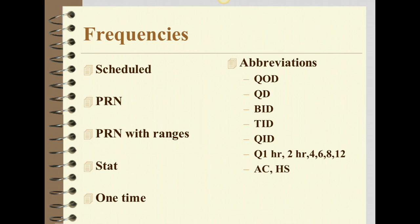When giving medication, it's important to know how frequently. Medications can be scheduled, as needed, as needed within ranges such as with insulin — if the blood glucose is 200 then you administer it — STAT meaning immediately, or one time. Common abbreviations related to frequencies are every other day, every day, BID, TID, QID, every one, two, four, six, eight, and twelve hours, before meals, and at hour of sleep.